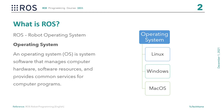According to Wikipedia, an operating system is system software that manages computer hardware, software resources, and provides common services for computer programs. The operating system performs functions as a set of nodes.